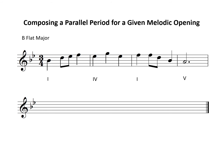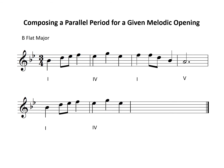We begin the second phrase by repeating the first two bars of the first phrase. Remember that the beginning bars of a parallel period are the same. Then we go to the end and write the tonic as the last note so that our melody sounds finished. So for my final note I'll write Bb, and of course the implied chord will be the tonic.